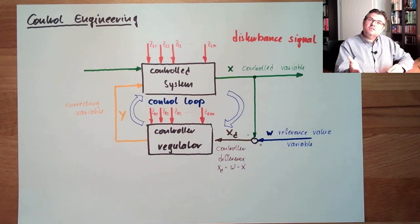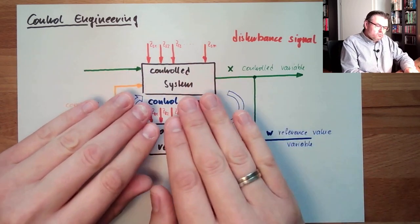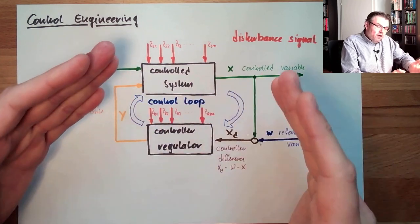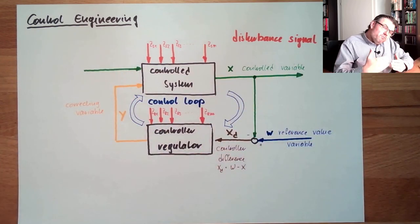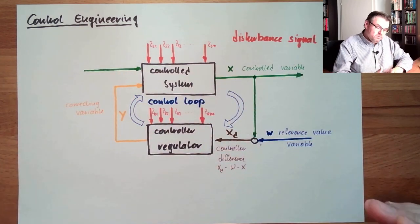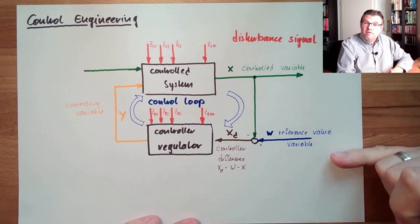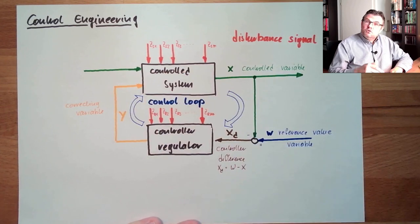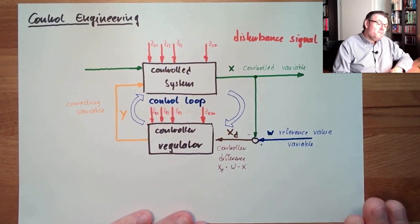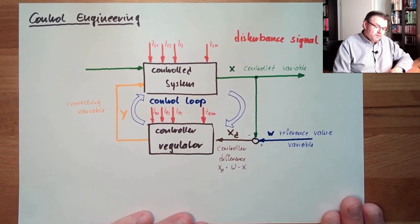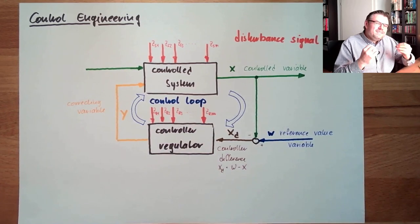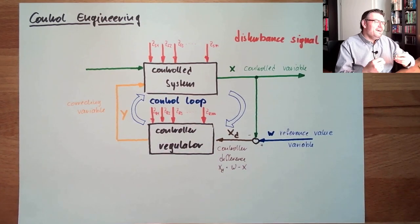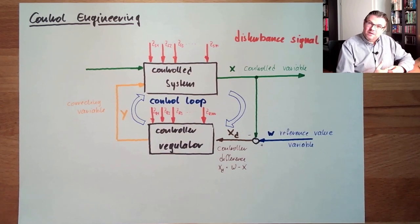This also applies in transition phases. If there is one phase running in the control system and we make a transition to another phase by changing, for instance, the reference value to another value, then we are in some sort of transition phase. And even during this transition phase, the control system is of course not allowed to reach dangerous areas.